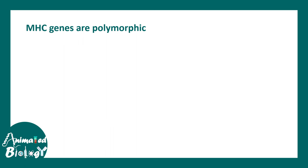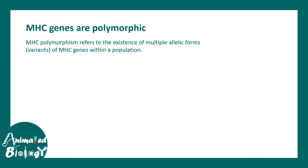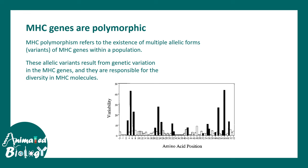Polymorphism refers to the existence of multiple allelic forms of MHC genes within a particular population. Polymorphism is a population-level concept, not an individual-level concept. These allelic variations result from small genetic variations in the MHC locus. Peptide sequencing shows that variability in residues is specifically located in distinct locations, not haphazardly distributed.